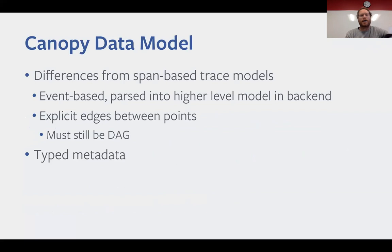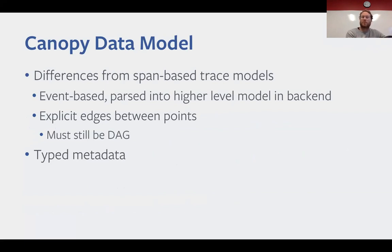Canopy is a little different from other span-based tracing systems. We're an event-based system that takes those events and parses them into a higher-level model in the back end. Because we're not span-based, we also have explicit edges between points. We still enforce that the overall structure must be a DAG - no edges going backwards in time - but otherwise you can have edges between arbitrary points within your trace.